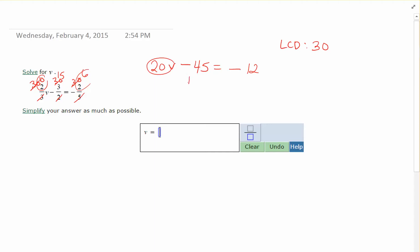So I want to solve for V now. I'm going to add the 45 to the other side. So 20V is equal to negative 12 plus 45. So that's going to be positive 33. And lastly, you're going to divide by the coefficient 20. So V is equal to 33 over 20, and you'll enter that in as an improper fraction. Always check to make sure that the fraction is reduced, and this is.